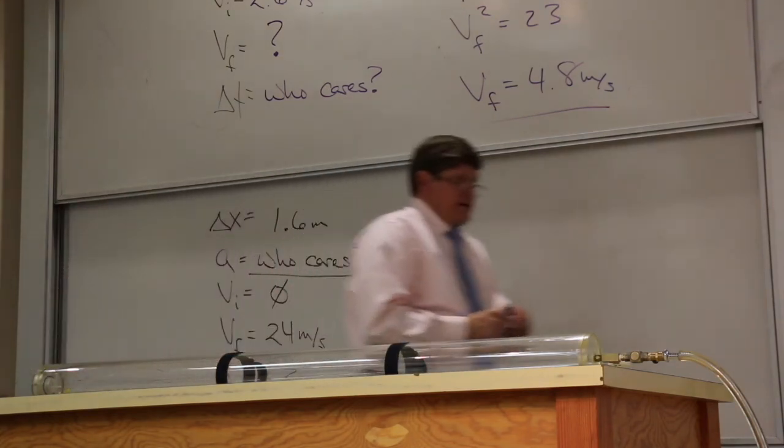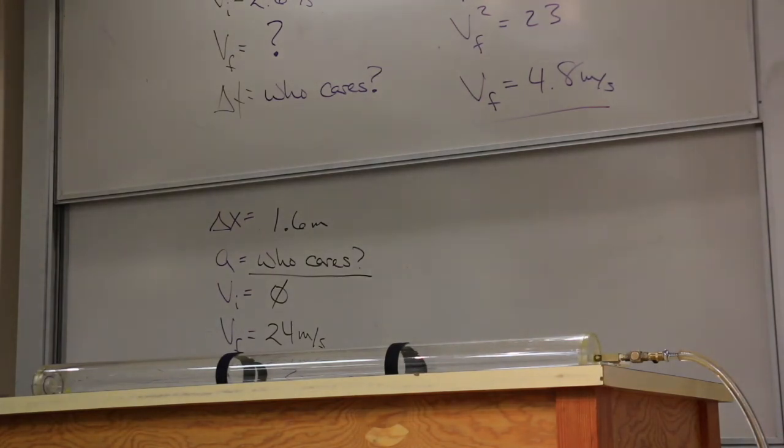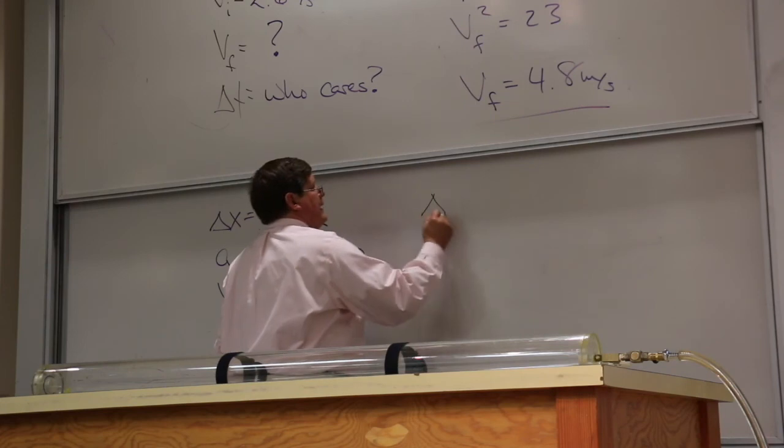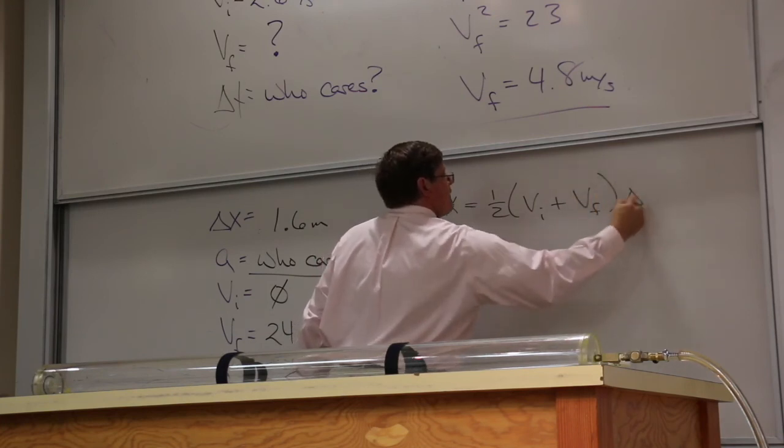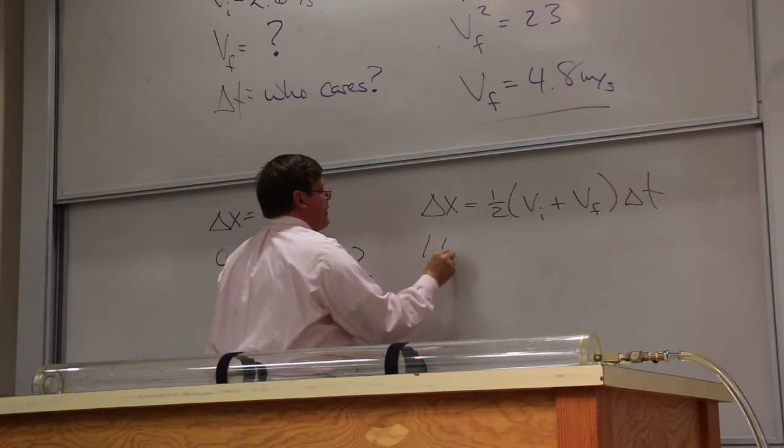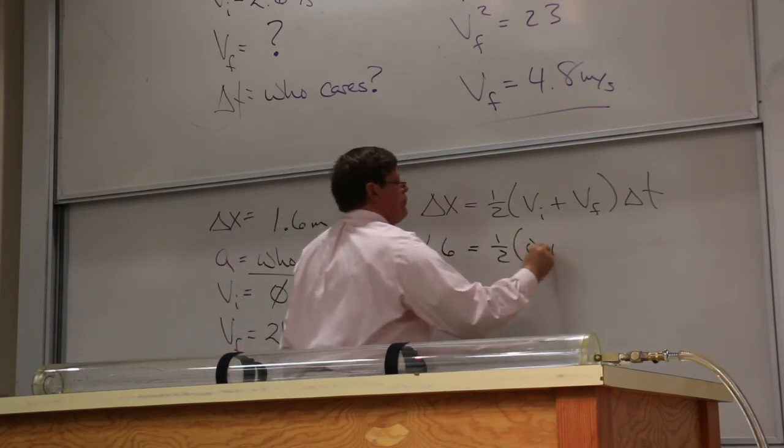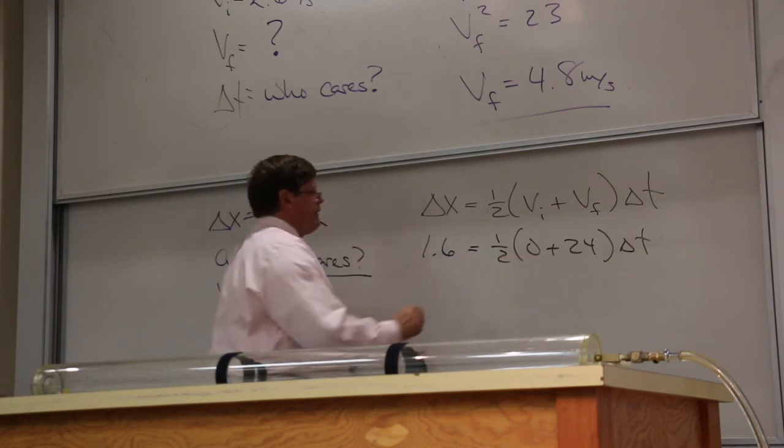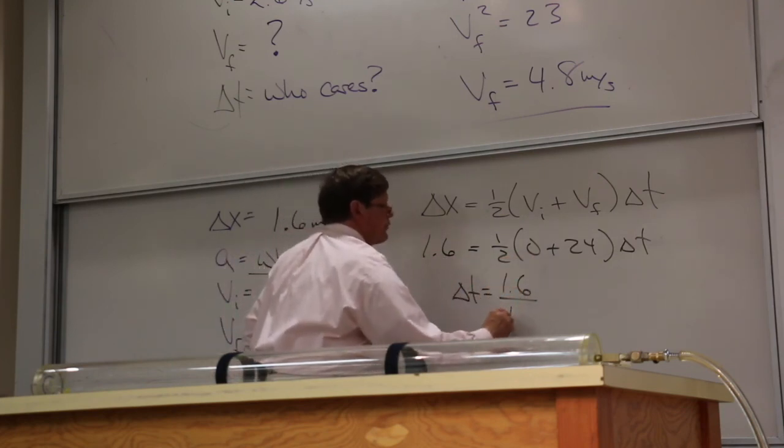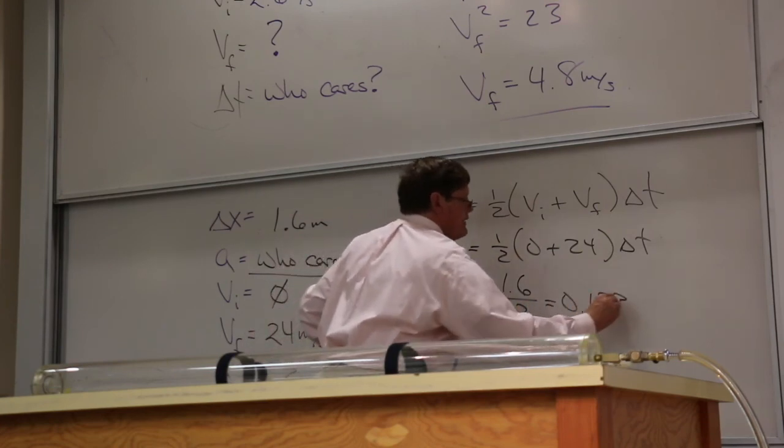That who cares tells me which equation is going to give me my answer. I go to my list, and I look for the equation that does not have acceleration. There's acceleration, there's acceleration, there's acceleration. I have to use this second equation here, which is the operational definition of average velocity. So, I write down the equation, I plug in what I know. This is 1.6 is equal to one half zero plus 24 times delta T. Well, zero plus 24 is 24, half of that is 12, so that gives me a delta T of 1.6 over 12, or 0.133 seconds.